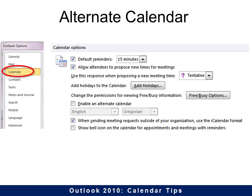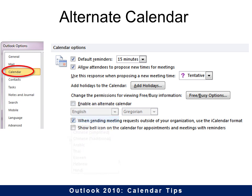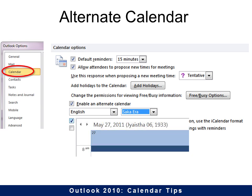Sometimes you might even want an alternate calendar. You could choose what language it is in and then the calendar that might be appropriate — for example, the Saka era calendar. If you have a lot of people that work who are from India, that would certainly be useful.